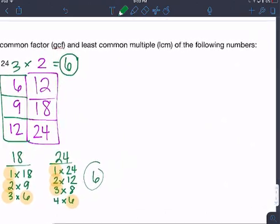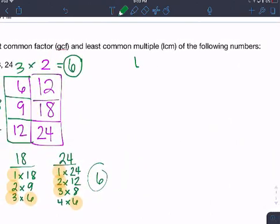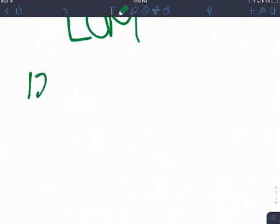All right, and then least common multiple. Remember, we're listing out those multiples. We have 12, 18, and 36. I'm just going to start kind of listing those ones that I know.